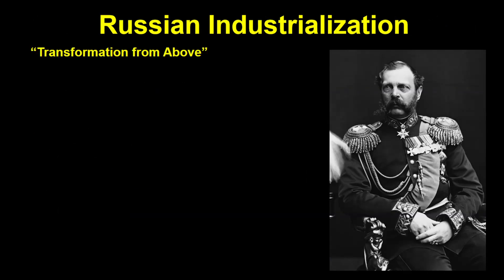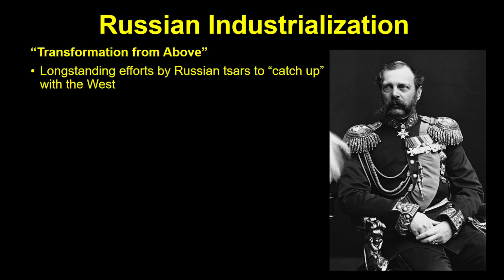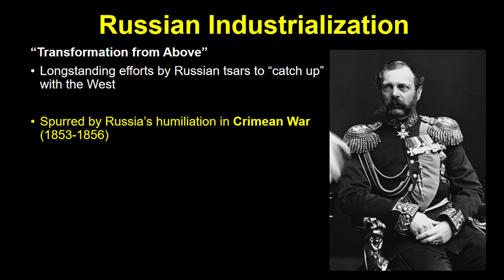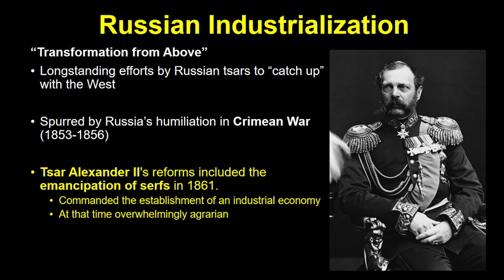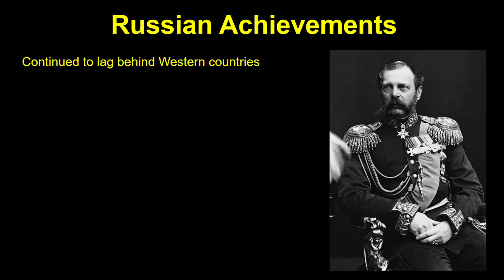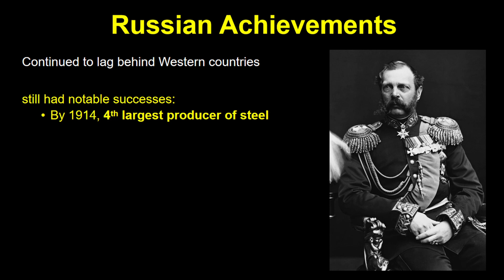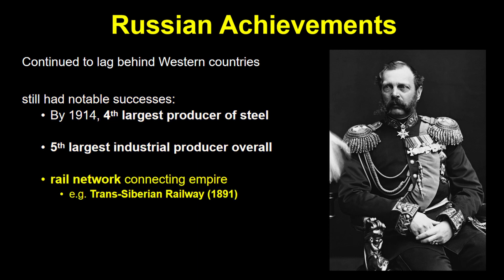In Russia, industrialization was the latest example of transformation from above — an effort to catch up with the West commanded by the Russian Tsars. The Russian Empire's embarrassing defeat in the Crimean War spurred the desire for modernization. Tsar Alexander II freed the serfs in 1861 and commanded the establishment of an industrial economy in what was at that time an overwhelmingly agrarian society. Although Russia continued to lag behind Western countries, their efforts at industrialization had notable successes, and by 1914, Russia was the fourth largest producer of steel and the fifth largest industrial producer overall. Their extensive railroad network, especially the Trans-Siberian, was also an important accomplishment that helped connect their enormous empire together.